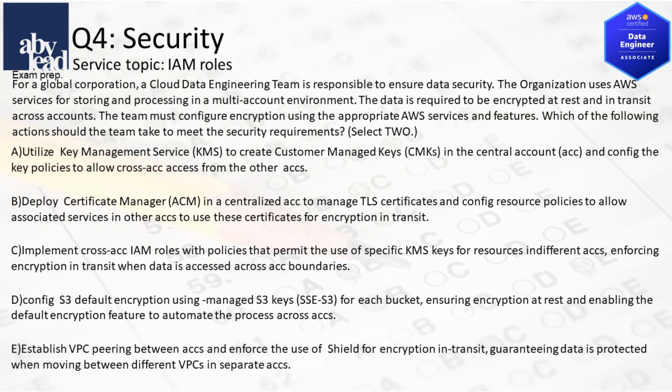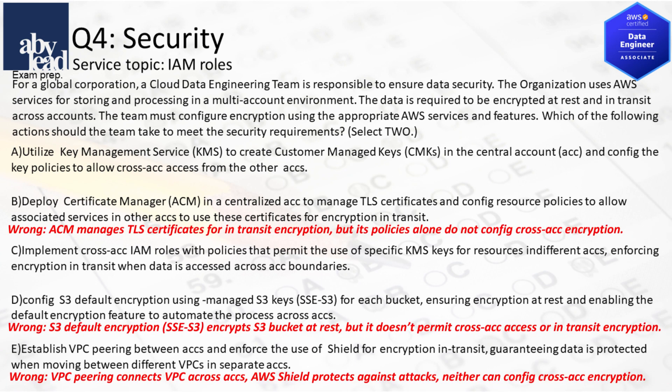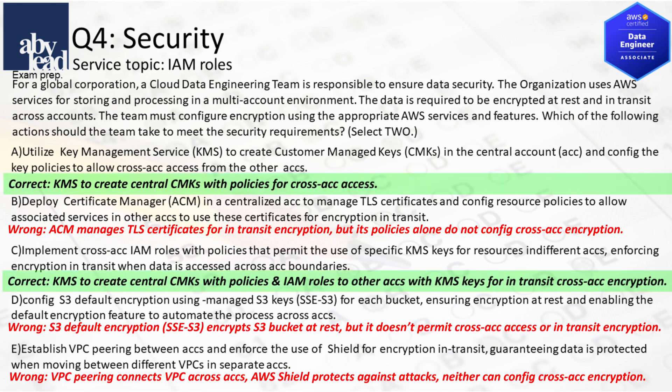Question 4: How do you encrypt at rest and in transit with a service for data processing in multi-accounts? False is to engage ACM for in-transit encryption, and S3 default encryption doesn't permit cross-account access. It's not better to misuse VPC peering or AWS Shield for cross-account encryption. The solution is to use KMS for central CMKs for in-transit cross-account encryption and IAM roles to other accounts.